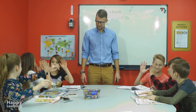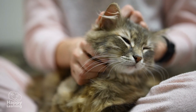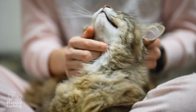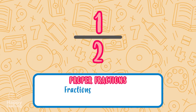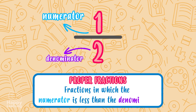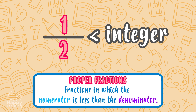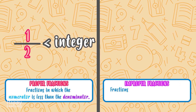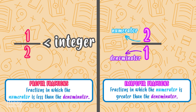Let's keep practicing. Remember that proper fractions are fractions in which the numerator is less than the denominator, and improper fractions are fractions in which the numerator is greater than the denominator.